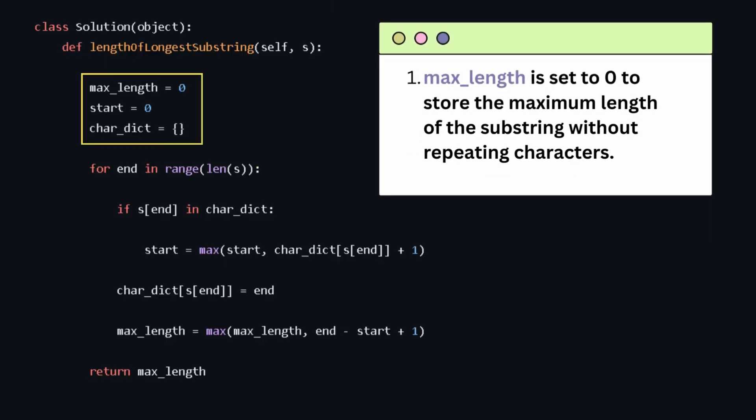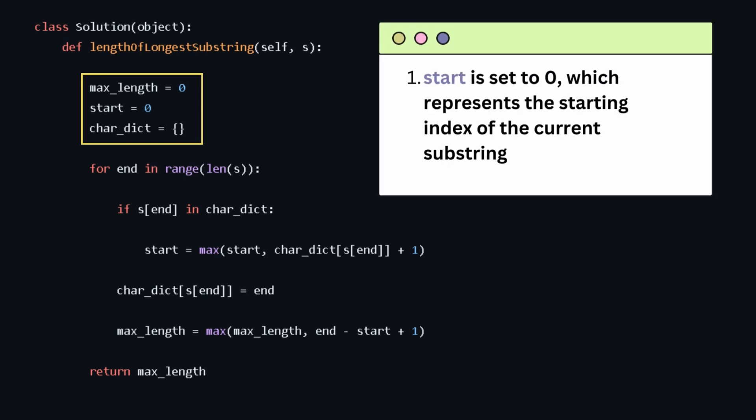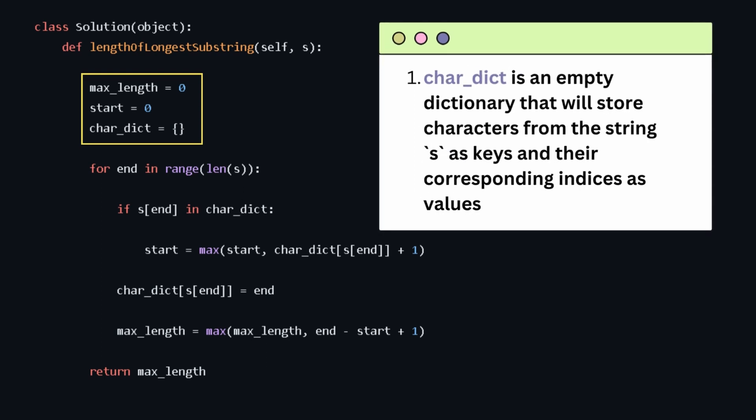Let's look at the code. The code starts by initializing variables. MaxLength is set to 0 to store the maximum length of the substring without repeating characters. Start is set to 0 which represents the starting index of the current substring. CharacterDictionary is an empty dictionary that will store characters from the string s as keys and their corresponding indices as values.